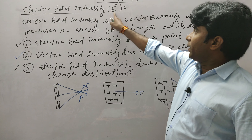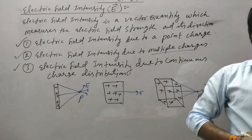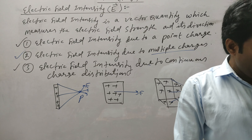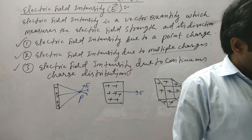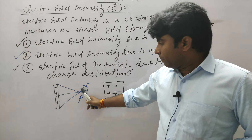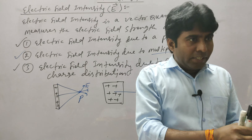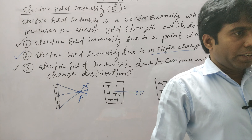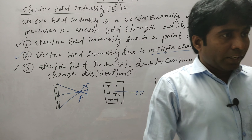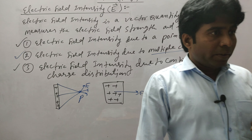Clear? Now it is understood what electric field intensity is — we determine the electric field strength and direction at a particular point due to a source charge. The strength here means how weak or strong the electric field is in a particular region. If a test charge enters that region, how strongly does the source charge repel it? If it repels strongly, the electric field intensity is very high.